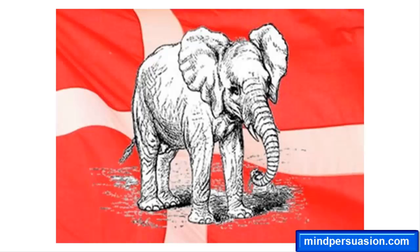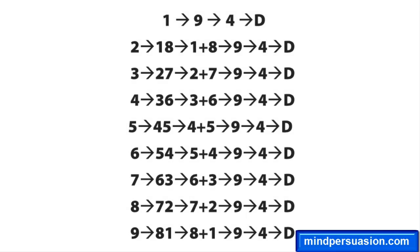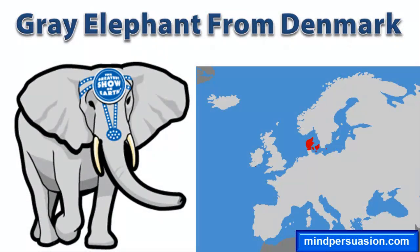Why does this always work? No matter what number they choose, when they multiply it by 9, the resulting digits will always add up to 9. When you subtract 5, you'll always get 4, which is D, and the only European country that starts with D is Denmark. A circus animal that starts with E is most likely an elephant.